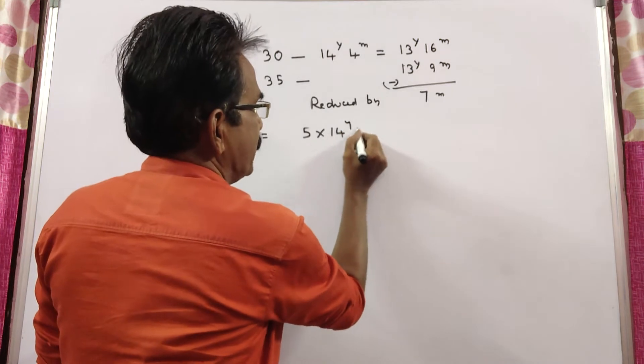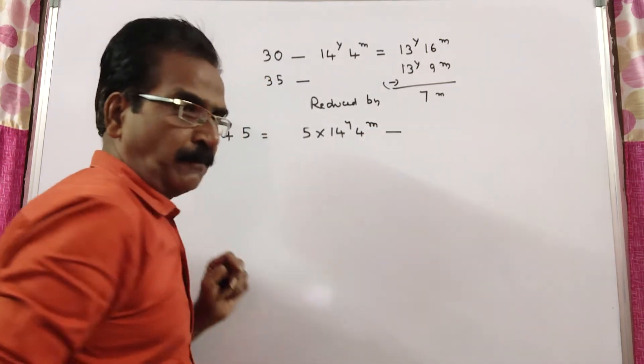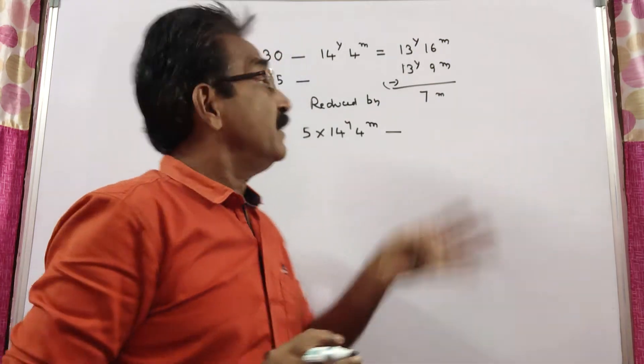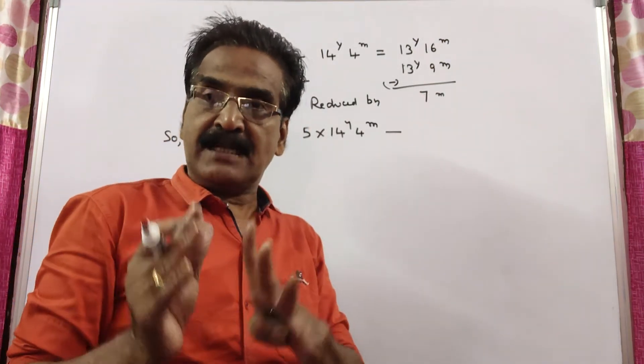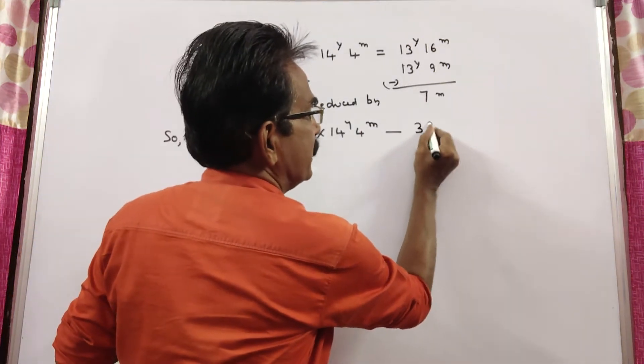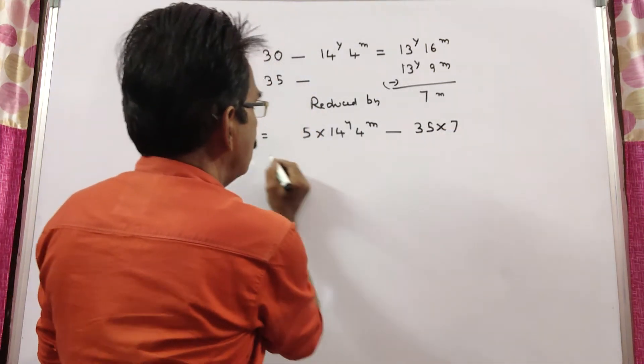14 years, 4 months. Now it is reduced by how much? 7 months on all, average 7 months on all 35 students. So, how much is decreased? 35 into 7.